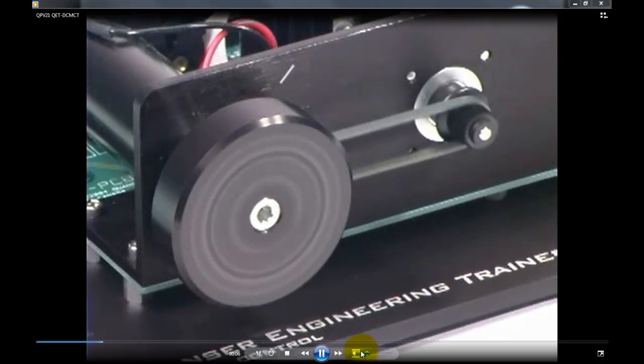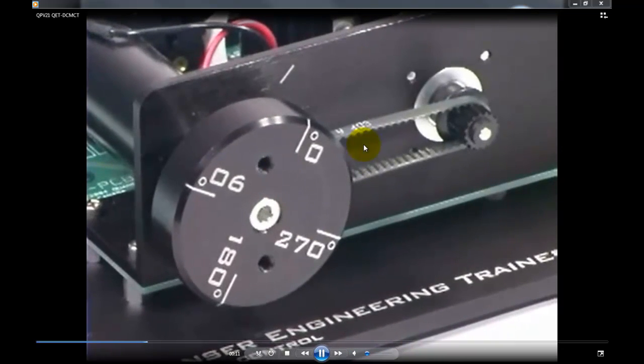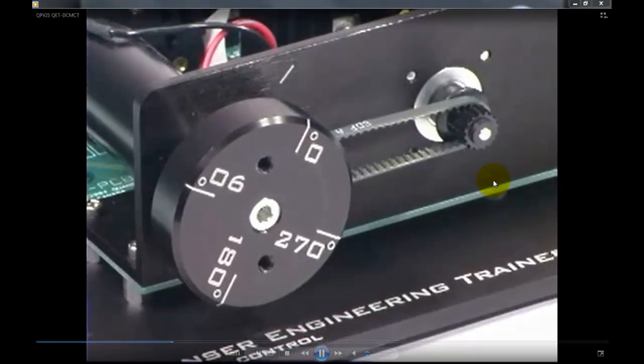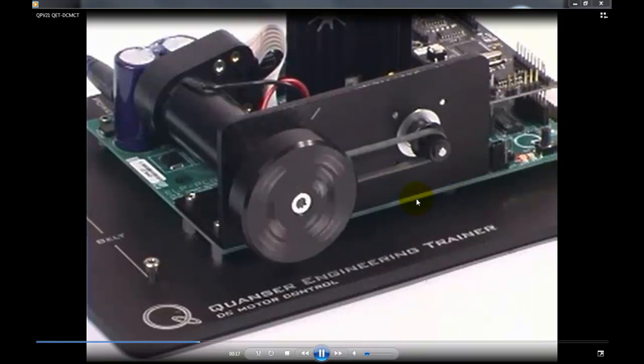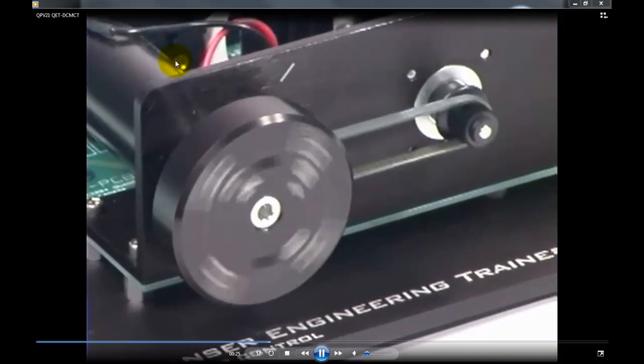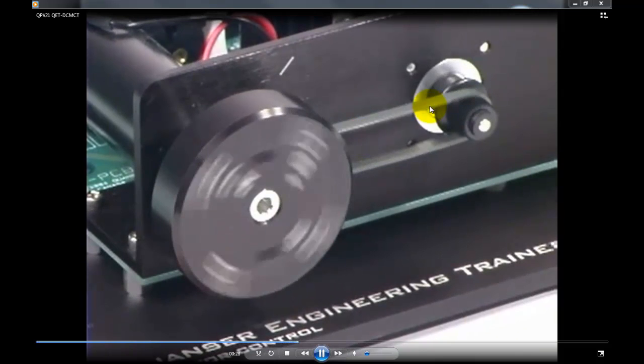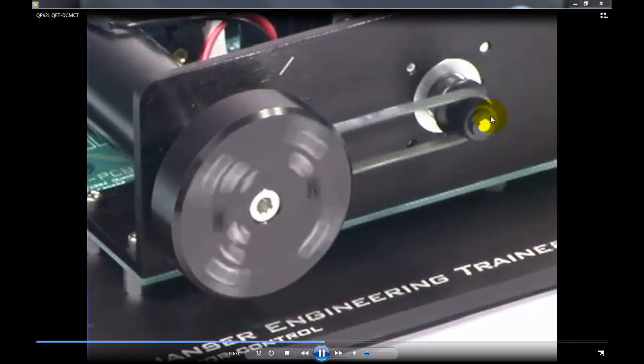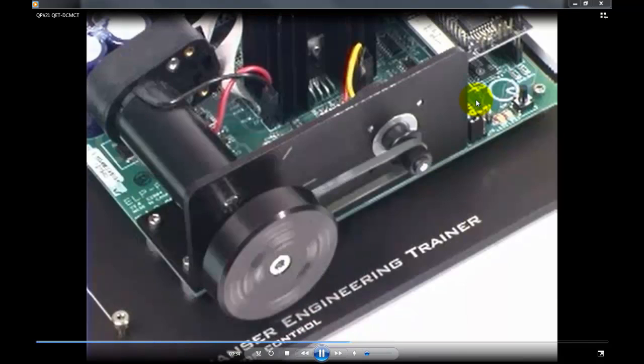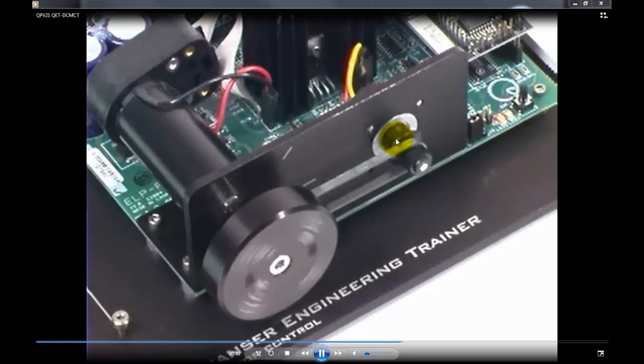This is the QET Quanser engineering trainer, DC motor control trainer. Dr. Carl Astrum actually worked with us to develop the curriculum for this experiment. It's a DC motor with a digital optical encoder and an analog potentiometer on the right side. This motor, by the way, is a Maxon DC motor, a really high quality motor.